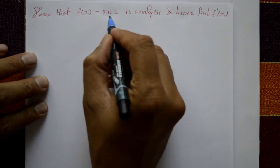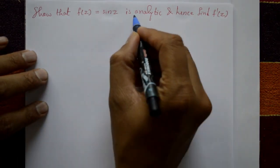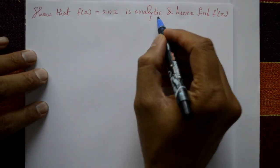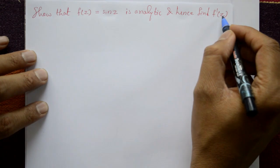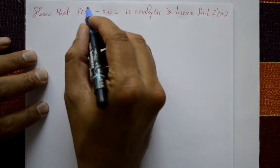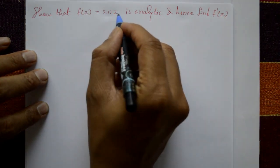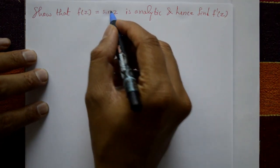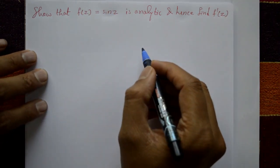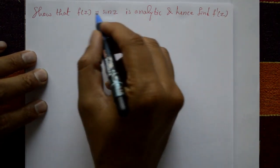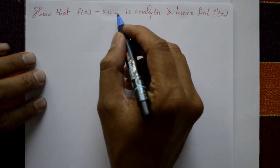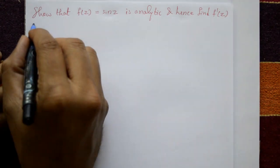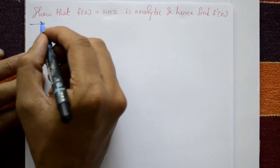Show that f of z is equal to sin z is analytic, and hence find f dash of z. When we differentiate sin z we get cos z — we will prove that f dash of z is equal to cos z.